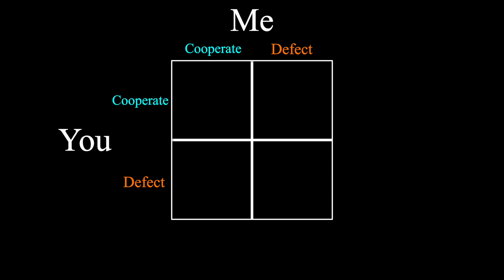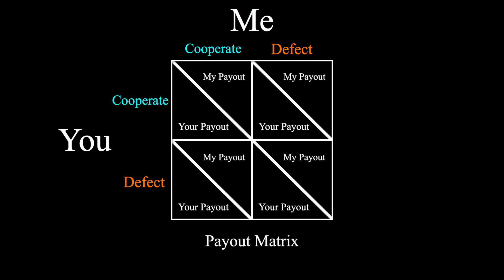That gives us four different possible outcomes with four different payouts. If we both choose to cooperate, we both get three points. If we both choose to defect, we both get one point. Here's the interesting part: if one of us defects while the other cooperates, the defector gets five points while the cooperator gets zero.